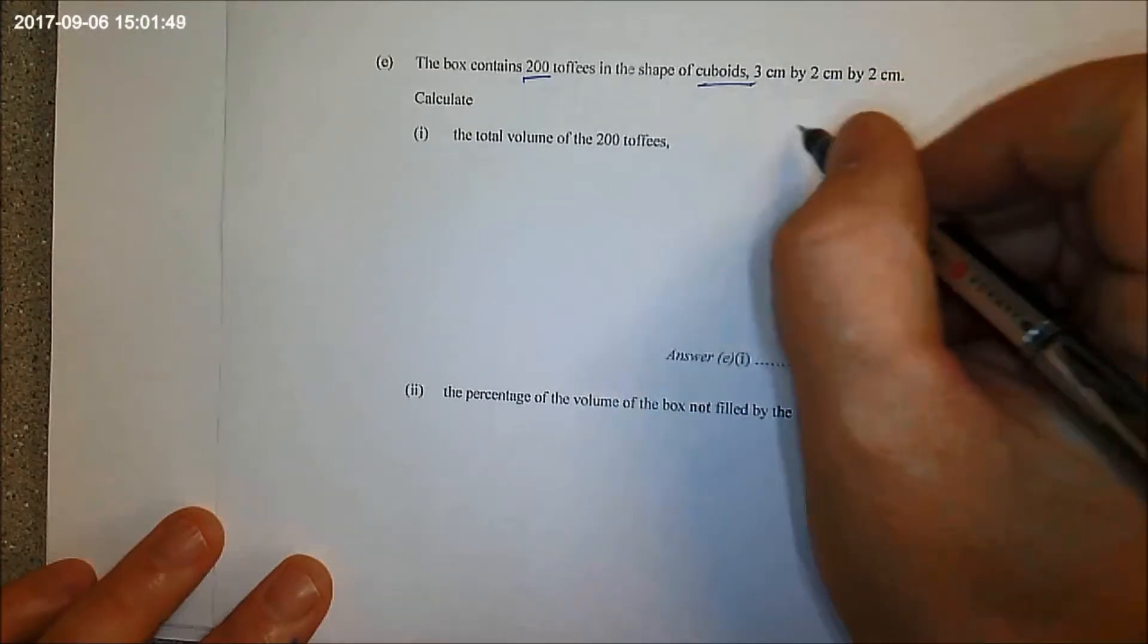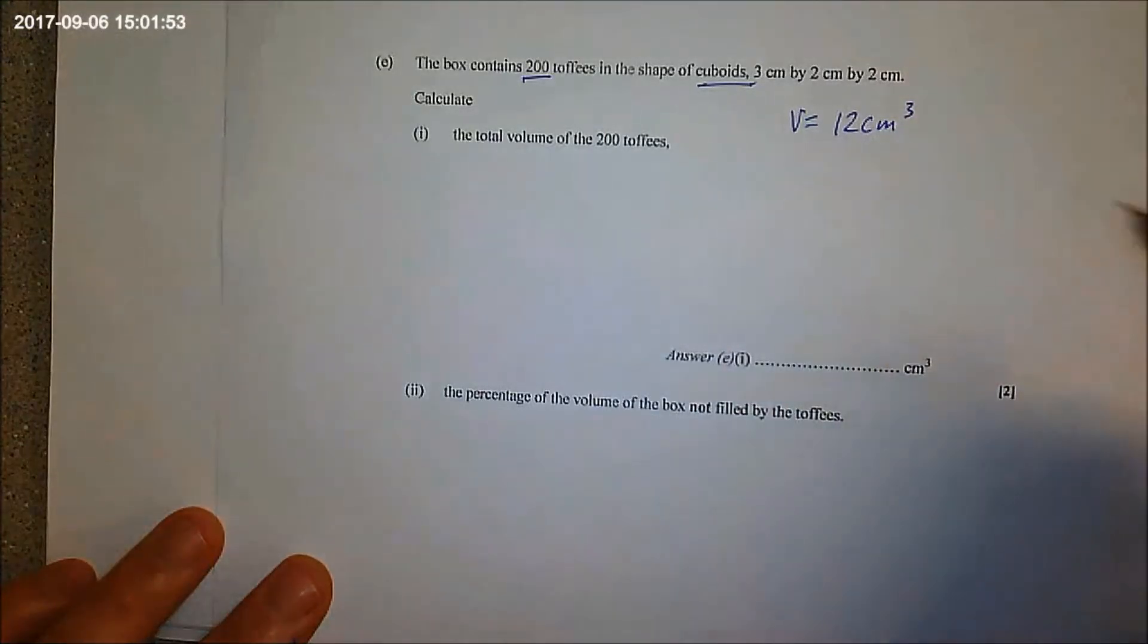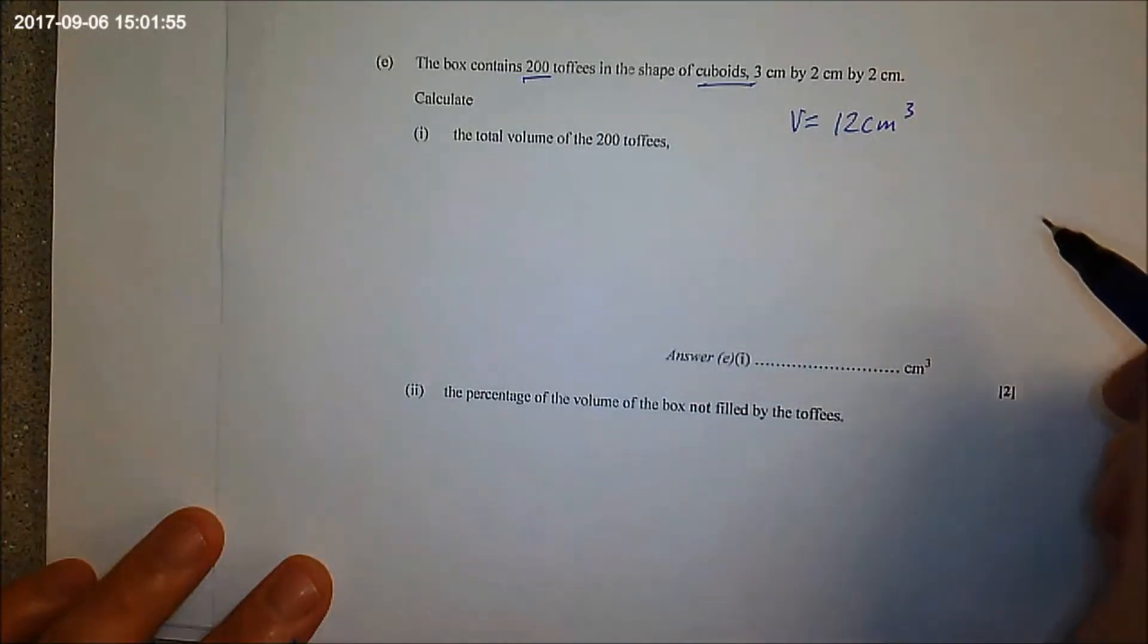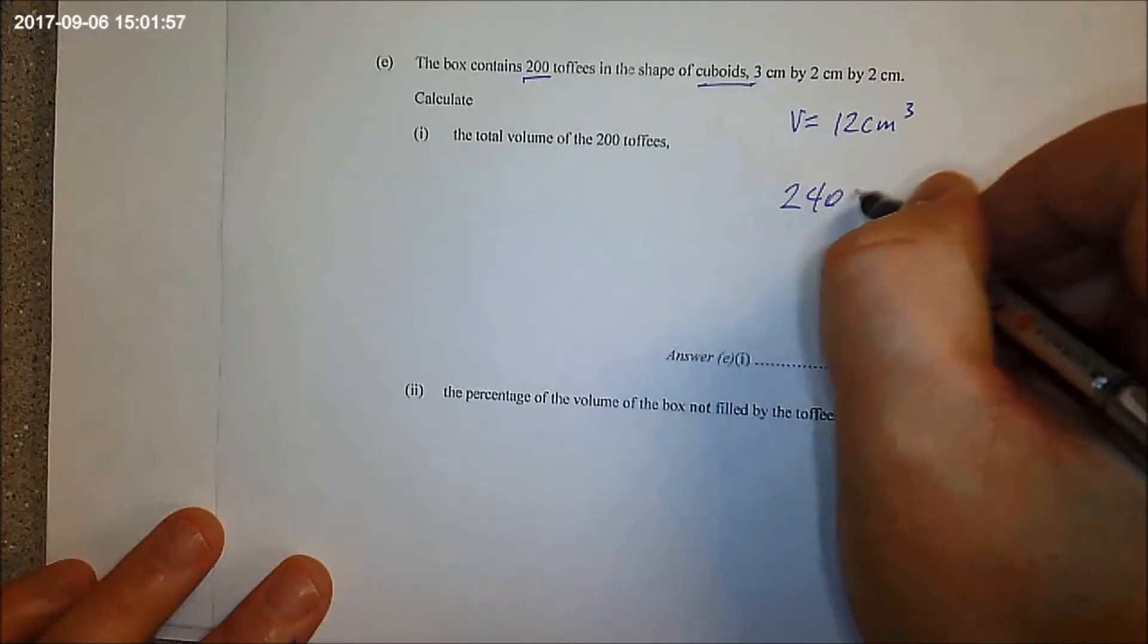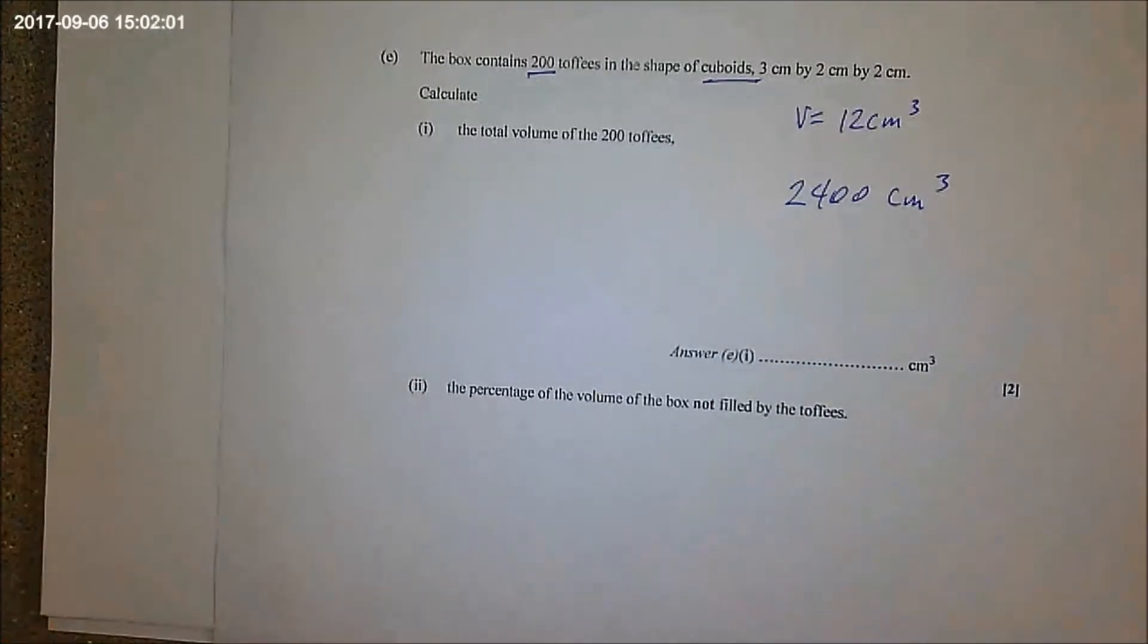So three times two times two, is that 12? So the volume is 12 centimeters cubed, but you have 200 of them.